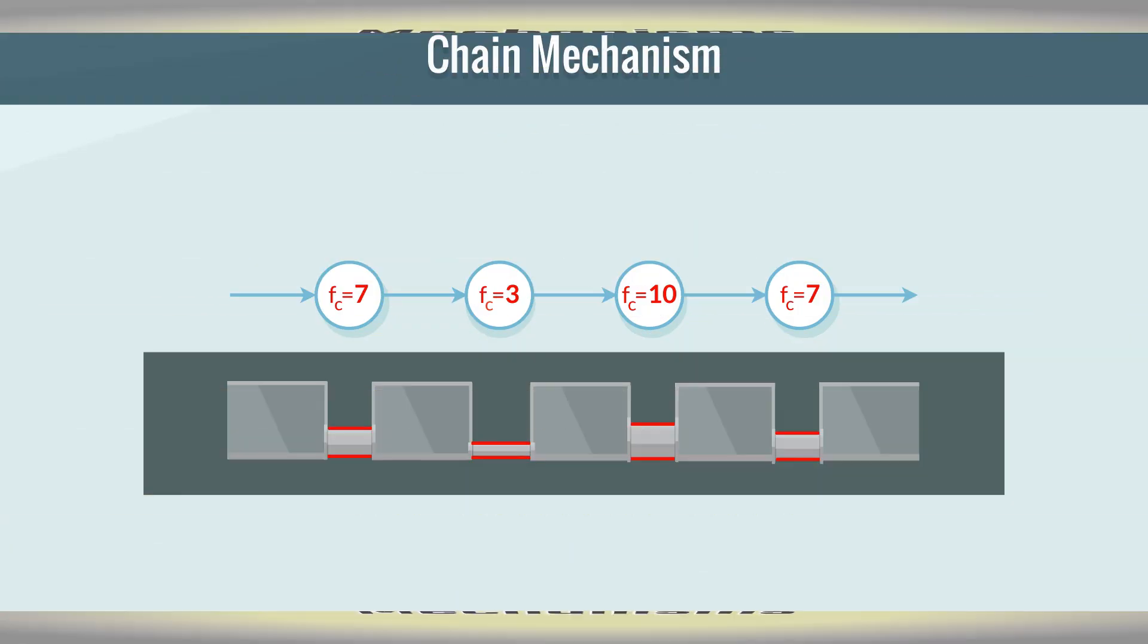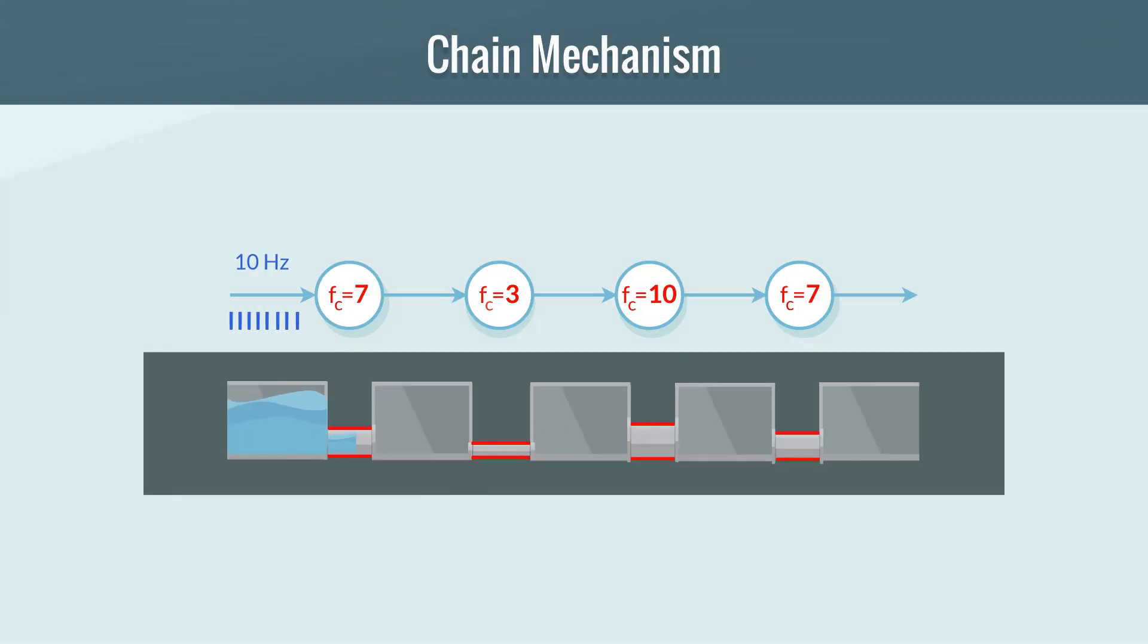What are the underlying mechanisms? The first is the chain mechanism, where a neuron with a low critical frequency controls the transmission rate, serving as a bottleneck.